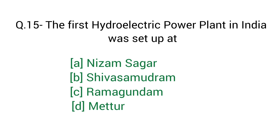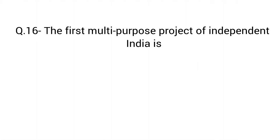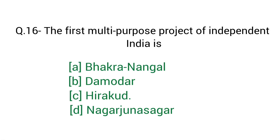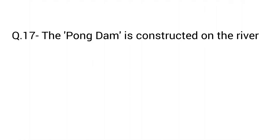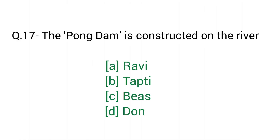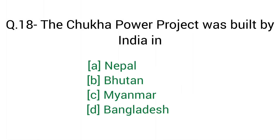Question number 15: The first hydraulic power plant in India was set up at — right answer option B: Sivasamudram. Question number 16: The first multi-purpose project of independent India is — right answer option B: Damodar. Question number 17: The Pong Dam is constructed on the river — right answer option C: Beas river. Question number 18: The Chukha hydro project was built by India in — right answer option B: Bhutan.